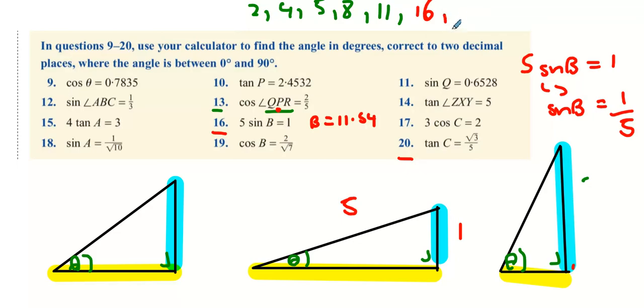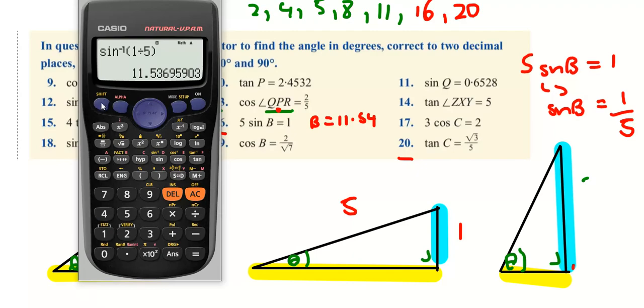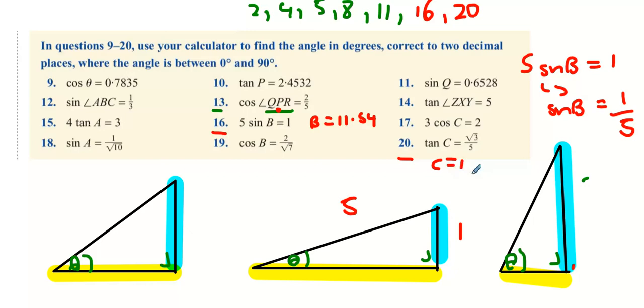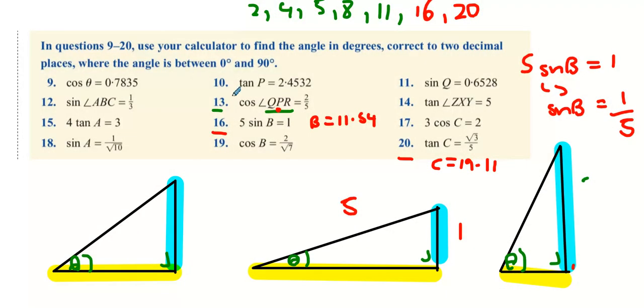And finally, question 20. If we're to do the same trick here, we just shift tan inverse root 3 over 5. Just make sure the root 3 is under the square root, then take a step, then the 5 underneath—the 5 should not be within the square root sign. And you get 19.11 degrees for C. Now we've done all of those ones. I think that's pretty much us for this one.